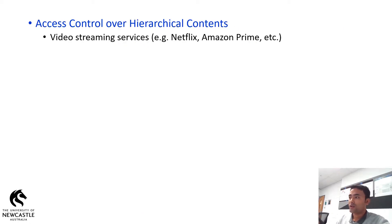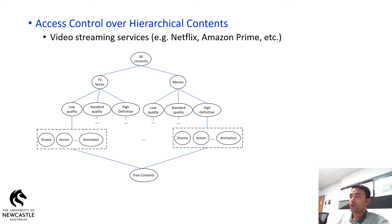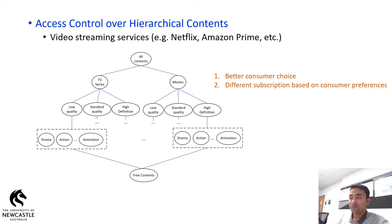The main rationale behind our work is to provide access control over hierarchical contents. For example, video streaming services such as Netflix and Amazon Prime use hierarchical contents — that means the contents can be organized or categorized into different groups, and the groups can be organized in a hierarchical form. A typical hierarchy is shown in the figure where the contents are grouped based on different characteristics such as genre and video quality. There are multiple benefits if we organize contents in a hierarchical form, such as better consumer choice, different subscription options based on consumer preferences, and better key management due to the inheritance property — for example, a consumer subscribing for higher-level contents can also access the lower-level contents.